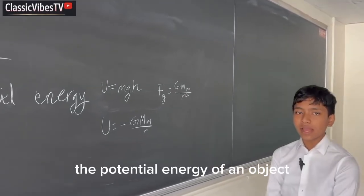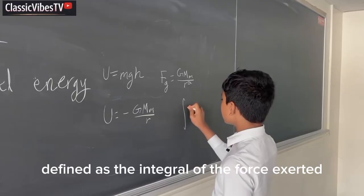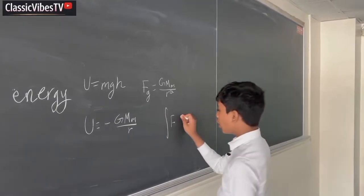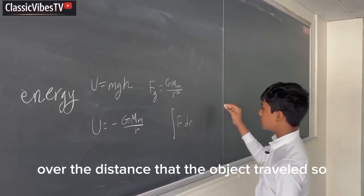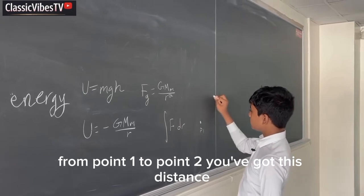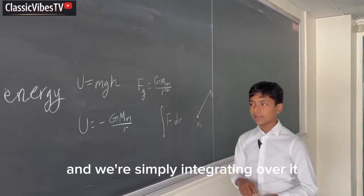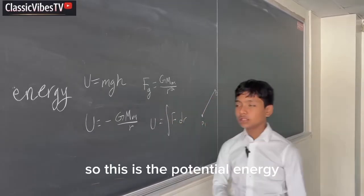Well, the potential energy of an object is essentially defined as the integral of the force exerted by moving that object over the distance that the object traveled. So from point 1 to point 2, you've got this distance, and we're simply integrating over it. So this is the potential energy.